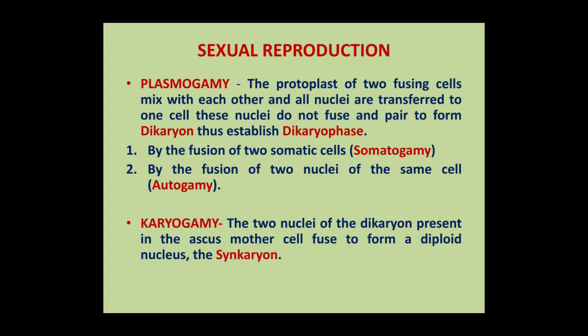The next step is karyogamy. Karyon means nucleus; gamy means fusion. Thus in karyogamy, the two nuclei of the dikaryon present in the ascus mother cell fuse to form a diploid nucleus, known as synkaryon. In sexual reproduction in Morcella, these two stages — plasmogamy and karyogamy — play a very important role.